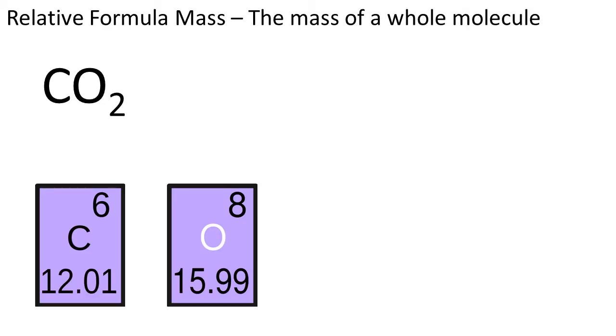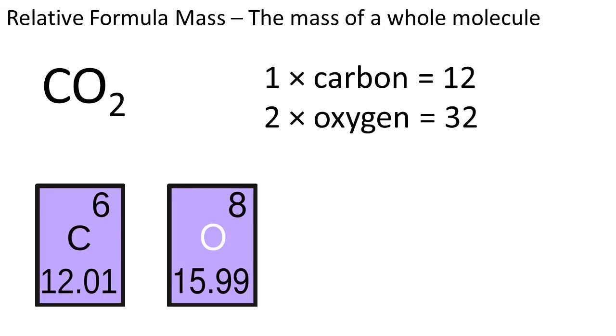In carbon dioxide, we have one carbon atom. A carbon atom weighs 12. And we have two oxygen atoms. Each oxygen atom weighs 16, so two of them is going to be 32. Add those together, and we have a relative formula mass of 44.